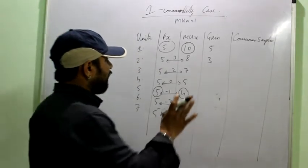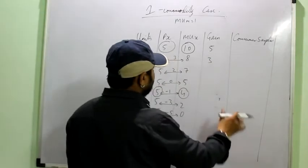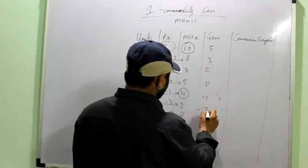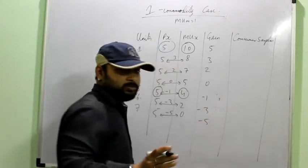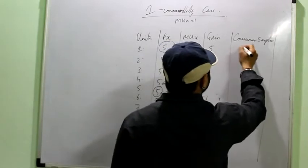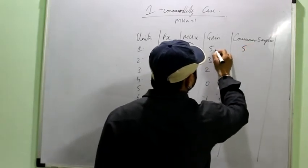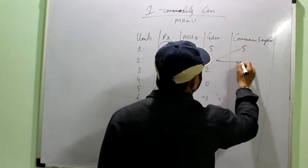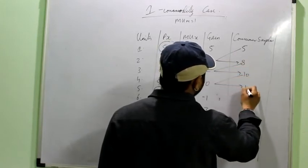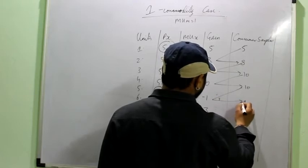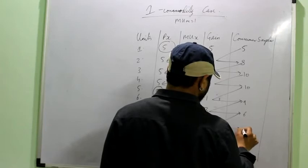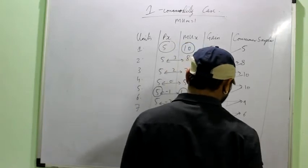Now, see. Now, I will calculate the total surplus. Remember, the idea is to maximize the total surplus, consumer surplus. So, after consuming the first commodity it is 5, then it is 5 plus 3, 8, then 8 plus 2, 10, 10 plus 0, 10, then 9, then 6, then minus 1.